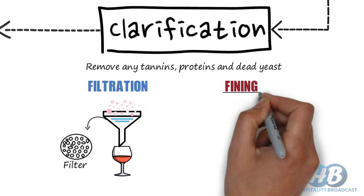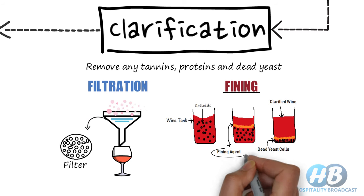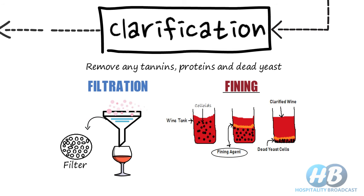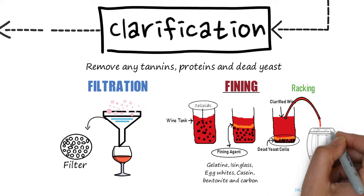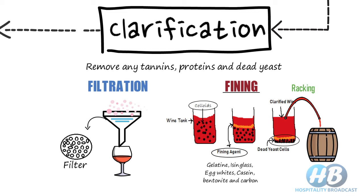Another method of clarification is fining. Fining is done by introducing an agent to the wine that physically binds with unwanted molecules, usually called colloids. Colloids include tannin, phenolics, and polysaccharides. Common fining agents include gelatin, isinglass, egg whites, casein, bentonite, and carbon. Once the binding is complete, the agglomeration precipitates out to the bottom of the vessel. Then the wine is racked to remove it from unwanted sediments. Racking is the process of moving wine or beer from one container to another using gravity rather than a pump, as a pump can be disruptive to the beverage.